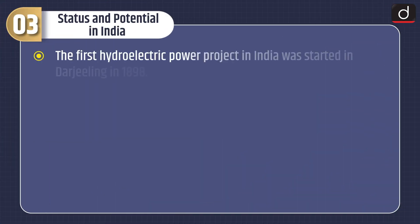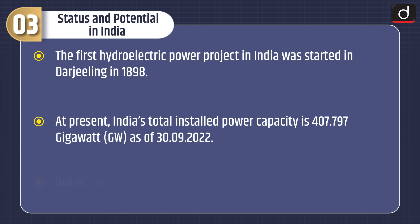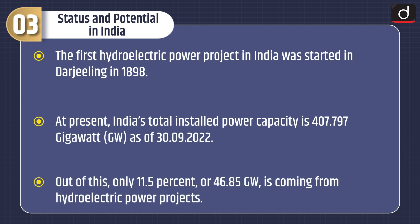Now let's discuss the status and potential in India. The first hydroelectric power project in India was started in Darjeeling in 1898. At present, India's total installed power capacity is 407.797 gigawatt as of 30 September 2022. Out of this, only 11.5 percent, or 46.85 gigawatt, is coming from hydroelectric power projects.